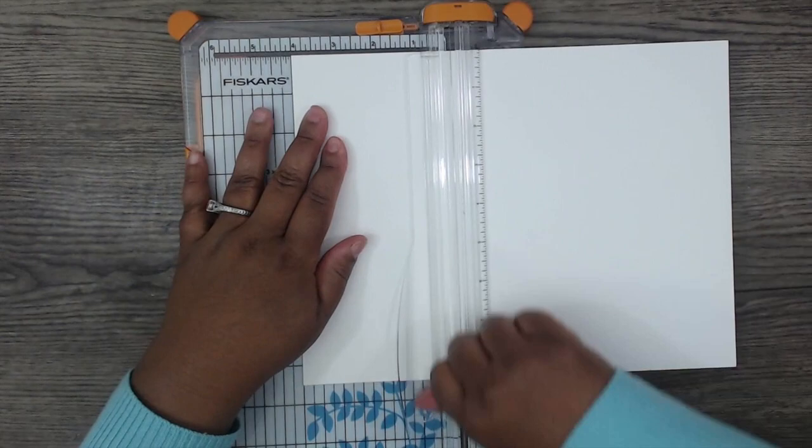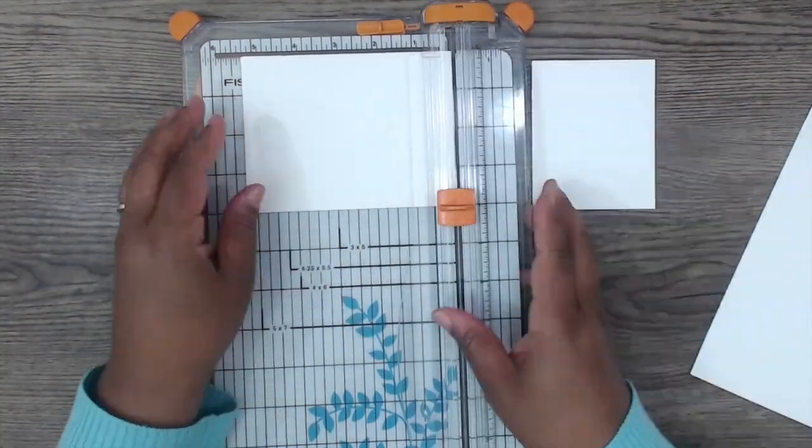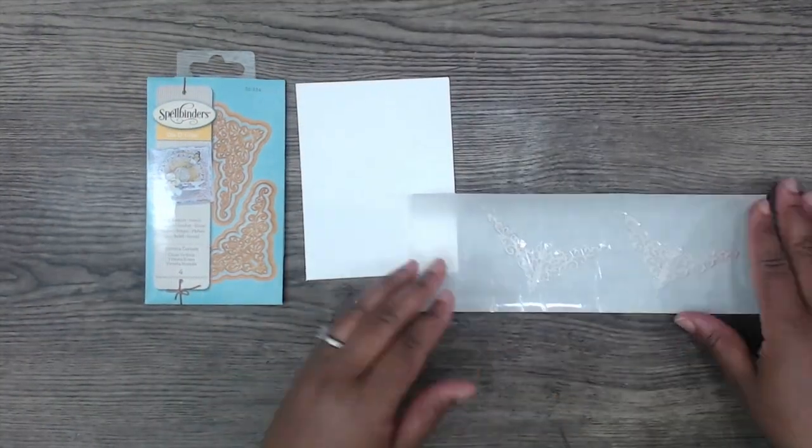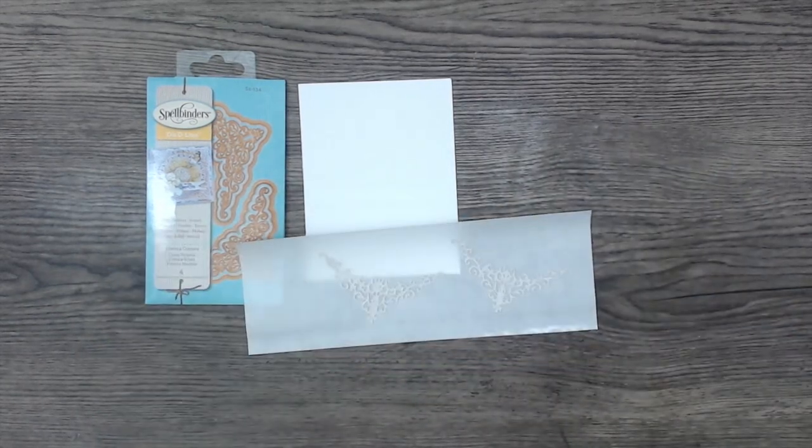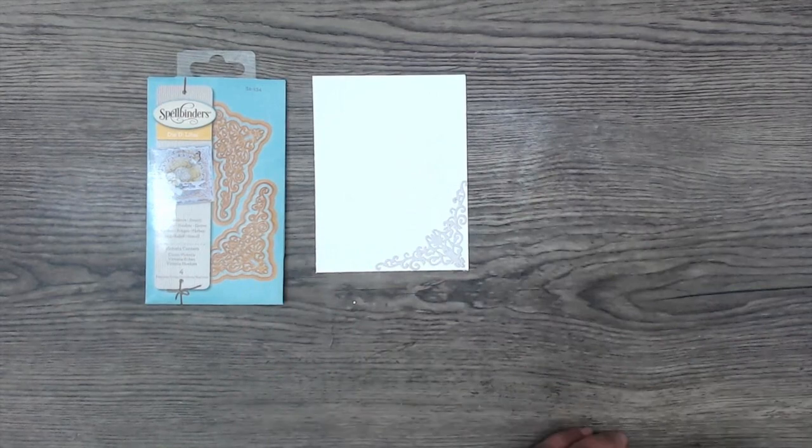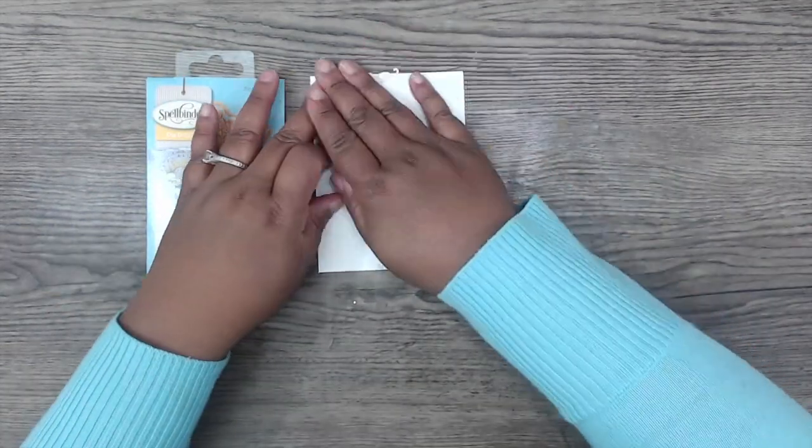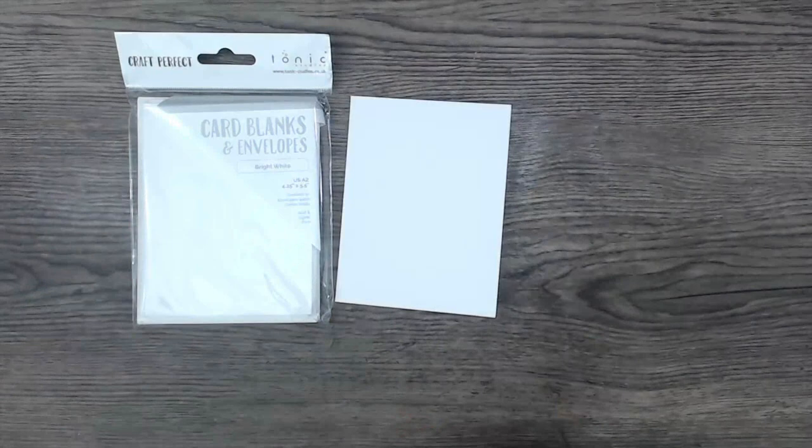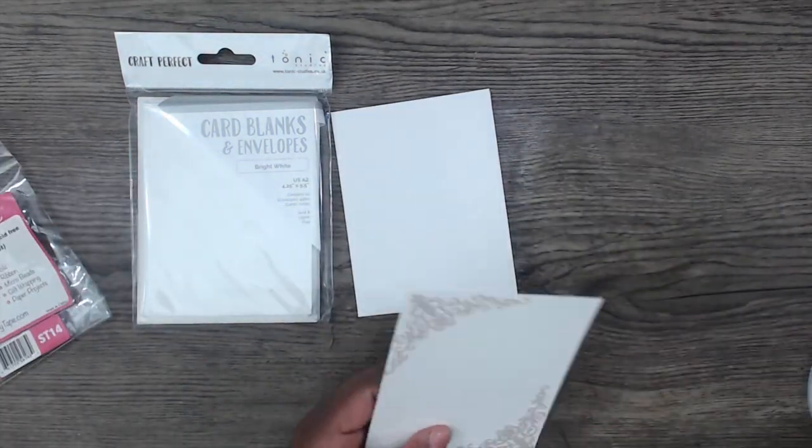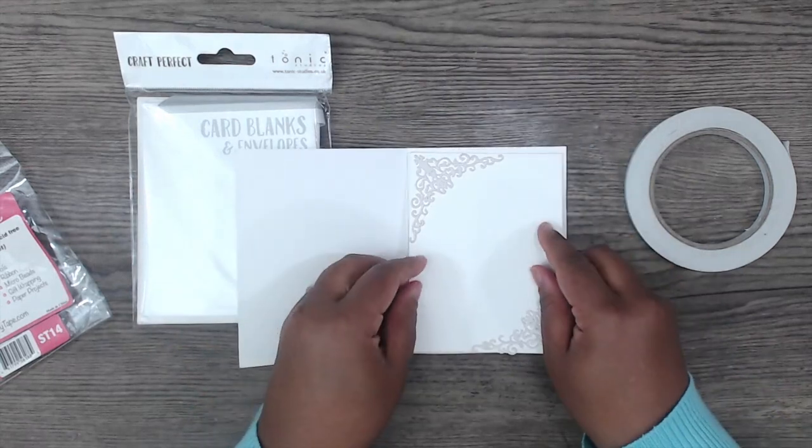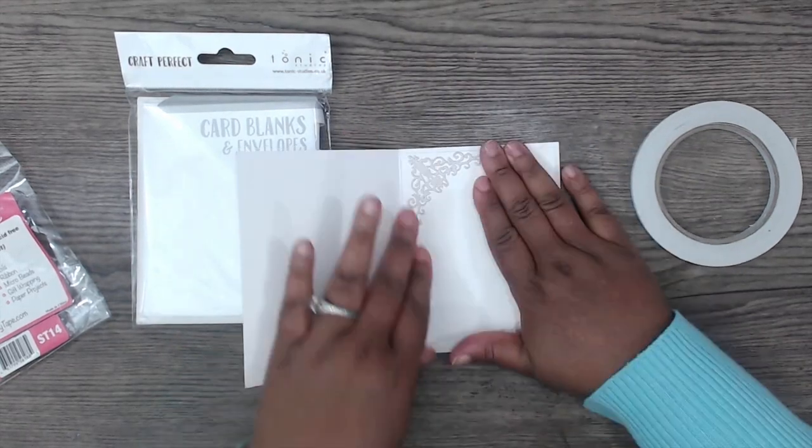We're going to cut down a piece of cardstock to 4x5.25 for the inside of our card. We're going to use the Victoria Corners by adding adhesive to the back as a decorative element for the inside panel. Then we're going to attach that to the inside of our card blank using quarter-inch scrappy tape. This helps the card to be more sturdy and also makes it look a little bit cleaner.